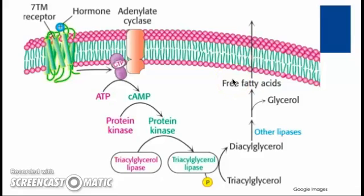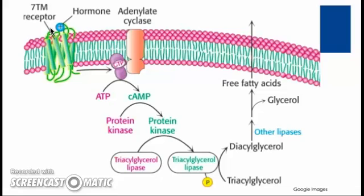To begin, hormones activating this process of lipolysis, particularly glucagon, epinephrine, or adrenocorticotropic hormone, or ACTH, will need to bind to a receptor on the adipocyte. This hormone receptor binding then activates the series of events needed to activate triacylglycerol lipase.